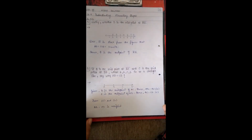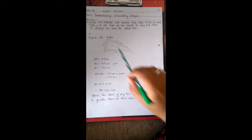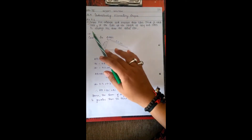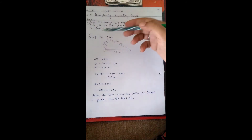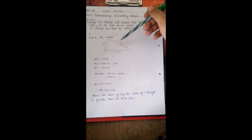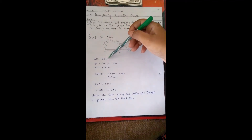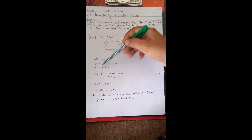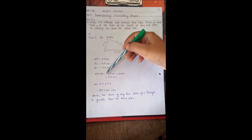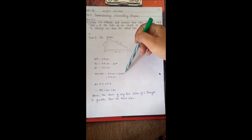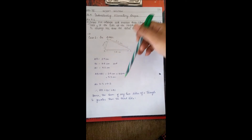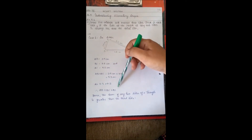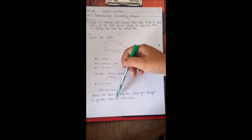Question 7: Draw five triangles and measure the sides. Check in each case if the sum of the length of any two sides is always greater than the third side. Case 1 — Triangle ABC: AB = 2.5 cm, BC = 4.8 cm, AC = 5.2 cm. AB + BC = 7.3 cm, which is more than 5.2 cm. Therefore AB + BC > AC, confirming the triangle inequality.